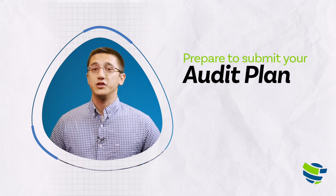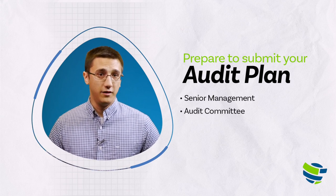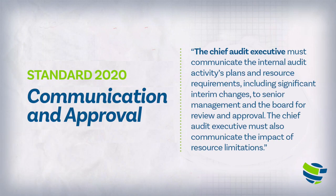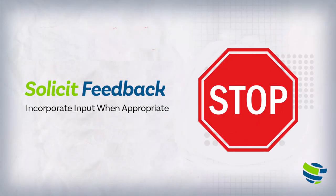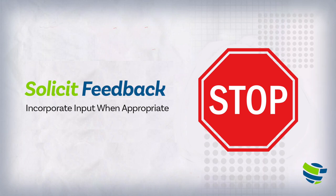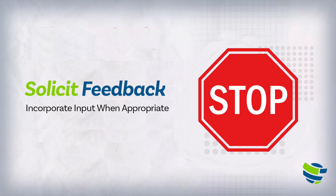Now that you've chosen your audit projects and outlined the timing, locations, and budgetary factors, you should prepare to submit your audit plan. You'll send it through your organization's approval process, which is typically senior management, the audit committee, governance committees, or even the full board, in order to make it a formal governance document. The standards address this as well — Standard 2020, Communication and Approval: the Chief Audit Executive must communicate the internal audit activity's plans and resource requirements, including significant interim changes, to senior management and the board for review and approval, and must also communicate the impact of resource limitations. Before you submit, solicit feedback from trusted colleagues in the organization and incorporate their input when it fits — then you can submit your plan with confidence.